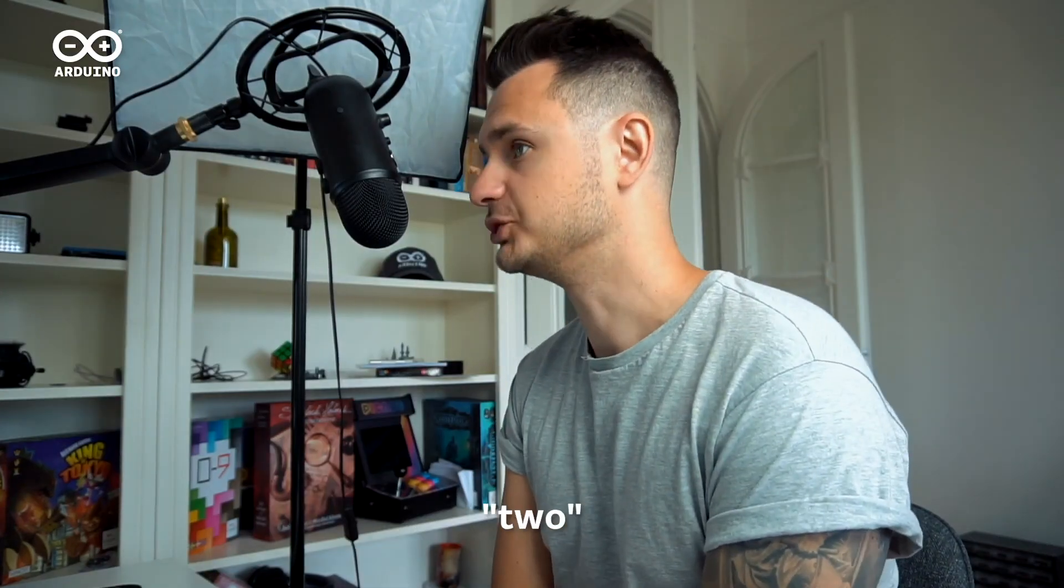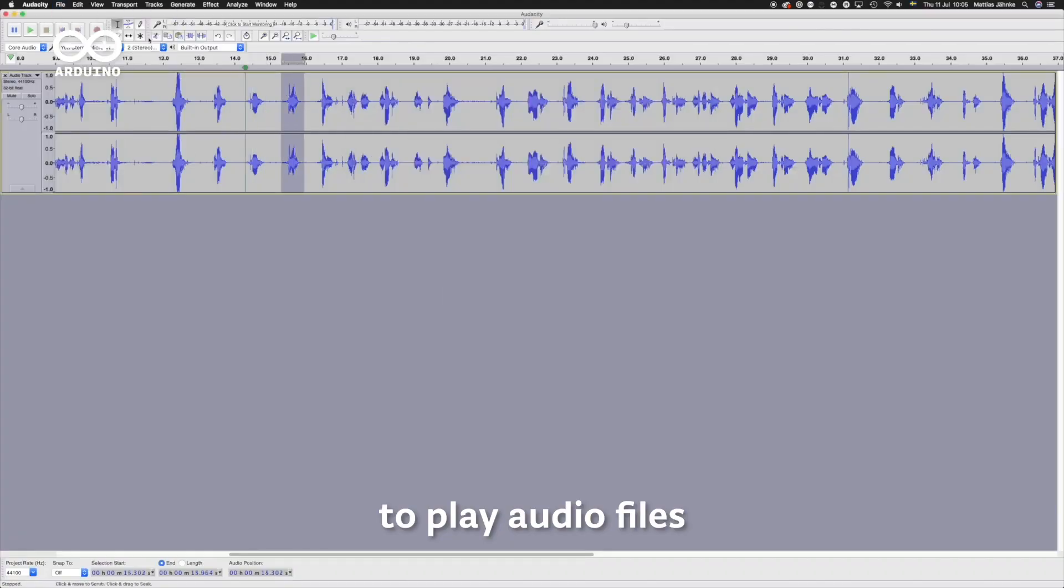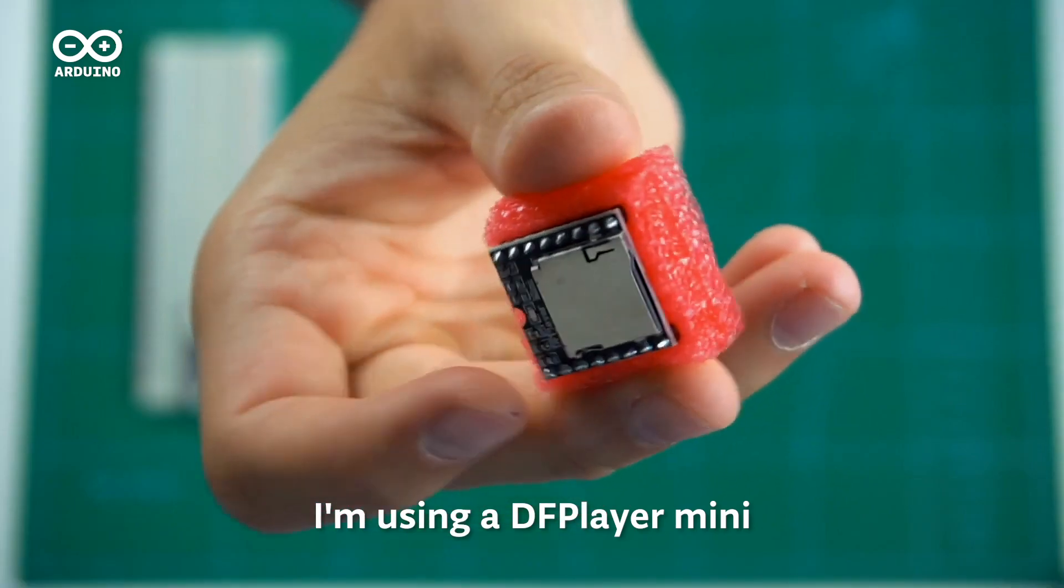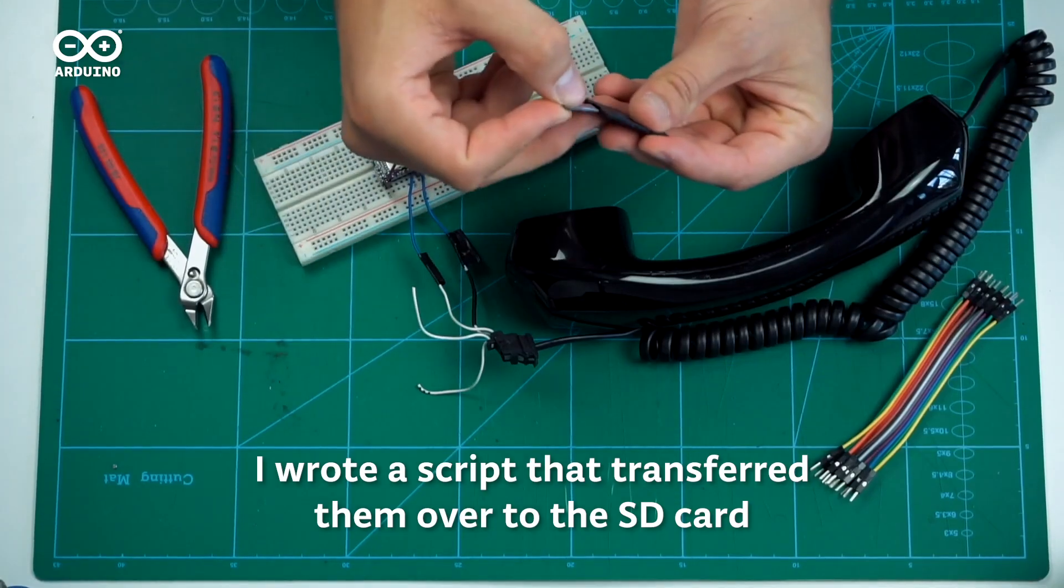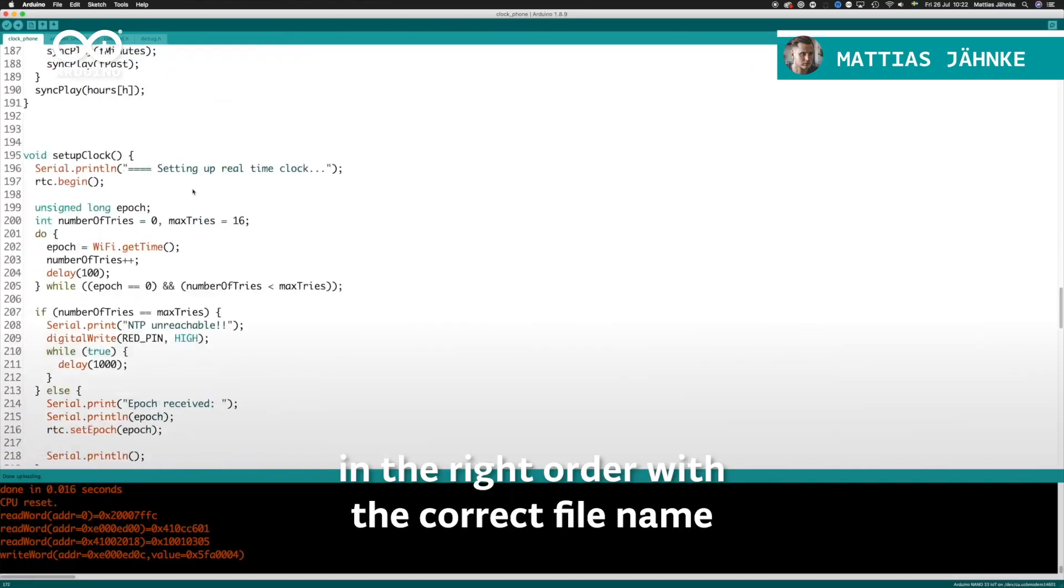The current time is 1 2 3 4 5 6 and 8. To play audio files I'm using a DF Player Mini. I wrote a script that transferred them over to the SD card in the right order and with the correct file name.